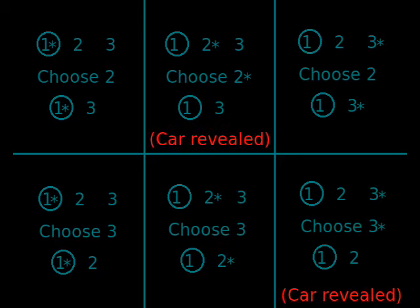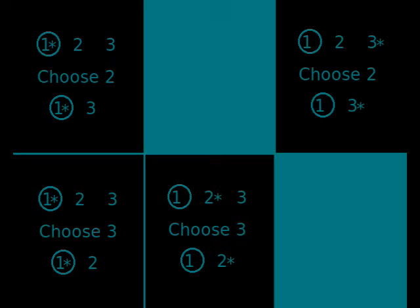If it is simply given that the host did not reveal a car, and we know there is no selection bias, then the remaining 4 permutations are equally likely. Now there are 2 possibilities where you have selected the correct door, and 2 possibilities where you have selected the wrong door. This is why our instinctive reaction to this problem — that our chances have increased to 50-50 and that switching is pointless — is correct if we are to assume that the host's behaviour is random.